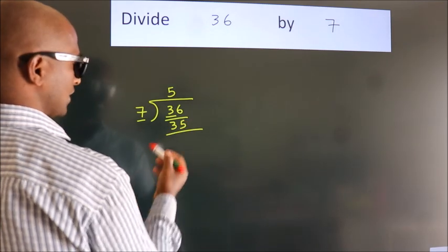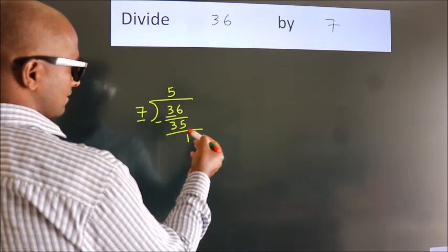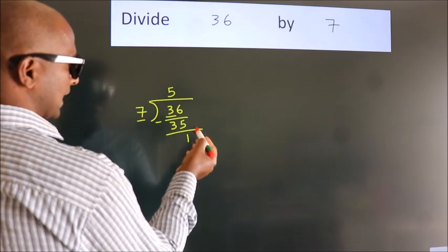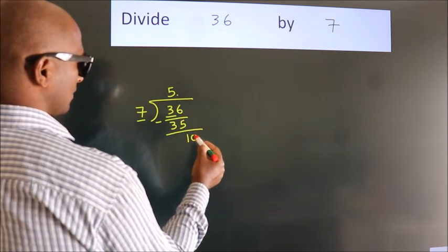Now, we should subtract. We get 1. After this, no more numbers to bring it down. So, what we do is we put dot, take 0.